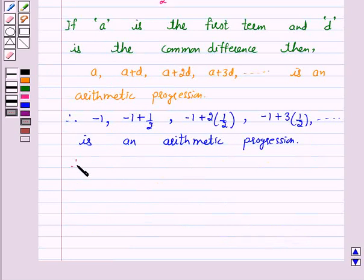Therefore, -1, -1/2, 0, and 1/2 are the first four terms of the AP.